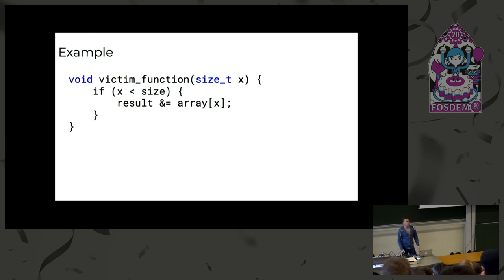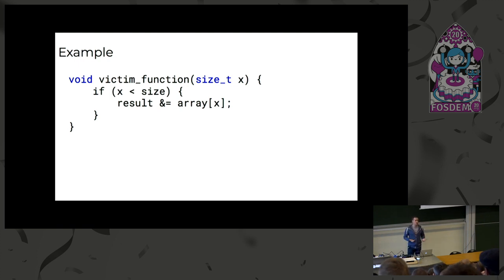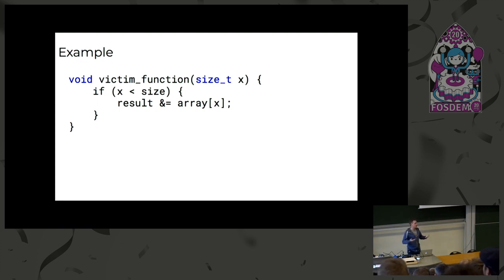Q: Are there any ways to do this without source code, by instrumenting the binary directly? A: Yes, you could. We just found it more convenient to implement it at the LLVM level. Binary instrumentation is possible — we just found it more convenient for this first prototype. You could re-implement it as binary instrumentation.